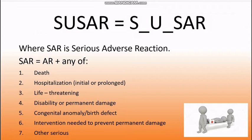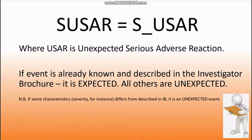Next, let's deal with expected or unexpected. The fact is that some adverse reactions, or even serious adverse reactions, can be expected. The information about them is already known, the possibility of their occurrence is described in the investigator brochure, and they are not something unexpected. If we observe a serious adverse reaction the appearance of which is not expected based on all currently available information about the investigational product, we would call it an unexpected serious adverse reaction — USAR.